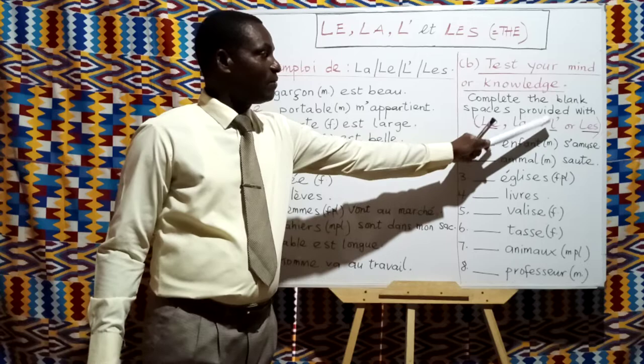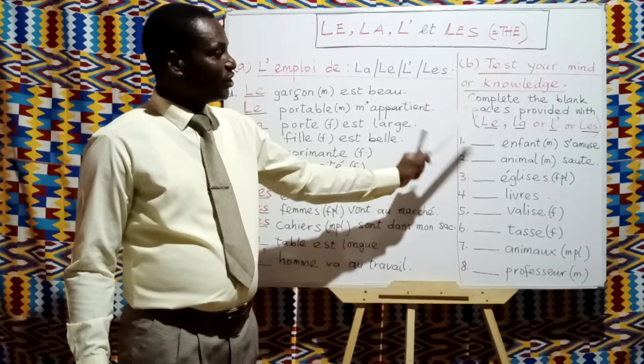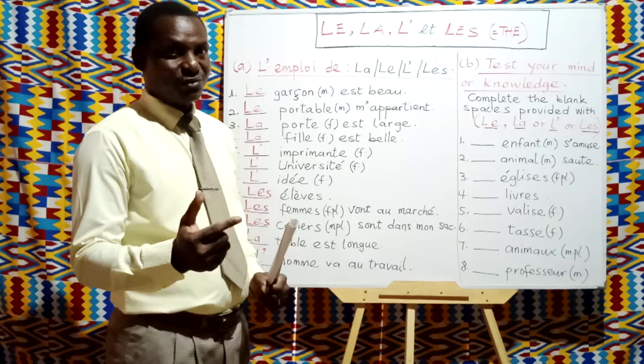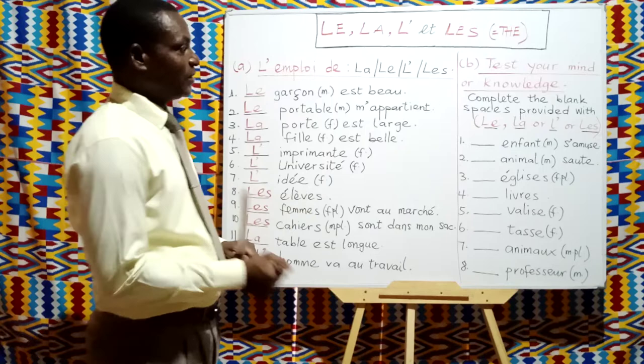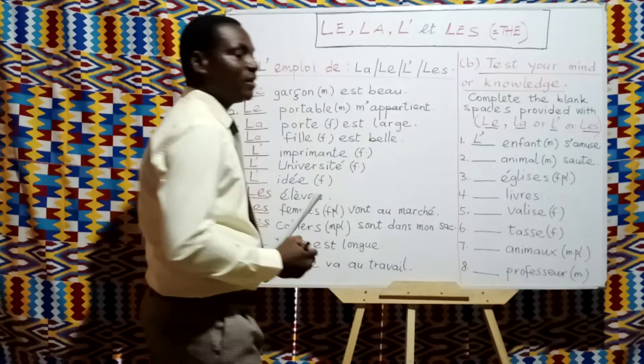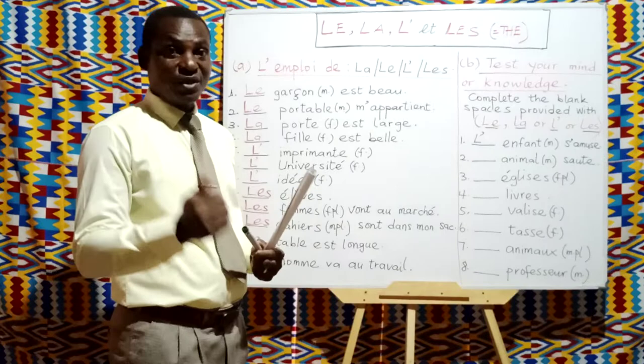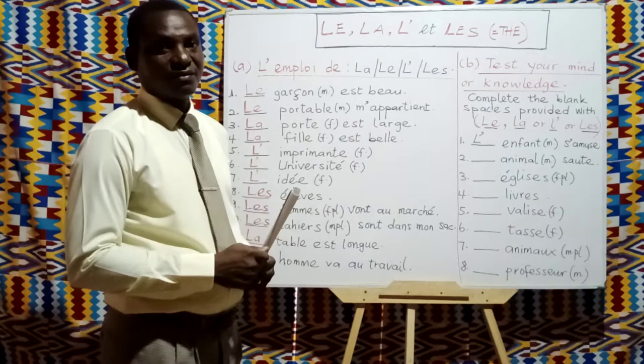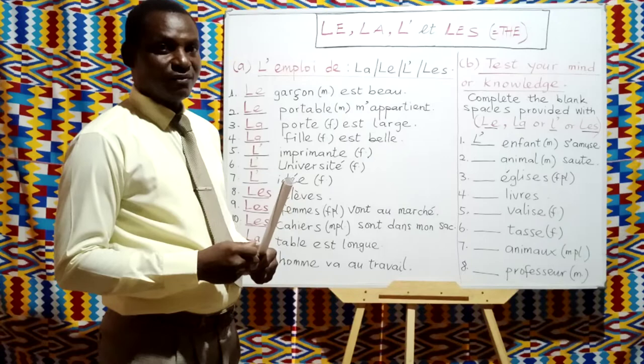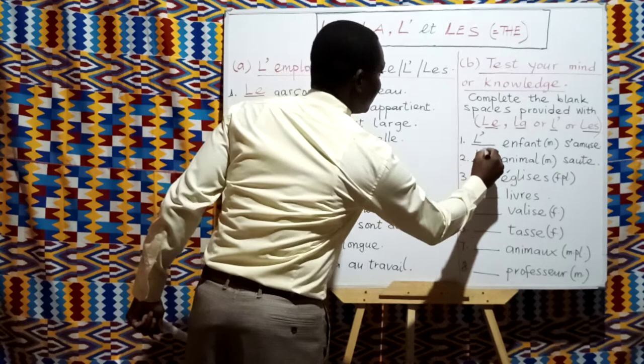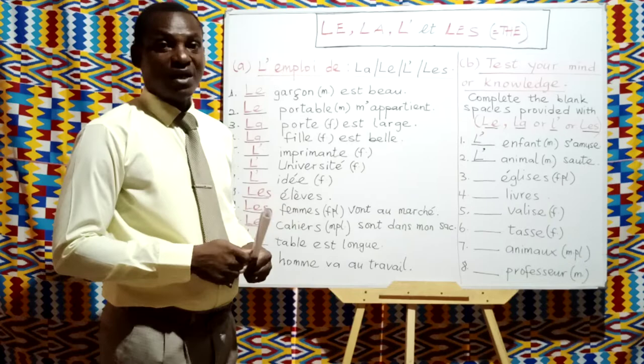Number one: blank enfant s'amuse. The answer is L'enfant s'amuse, because enfant is masculine singular and begins with the vowel 'e'. Number two: blank animal saute. The answer is L'animal, because animal is masculine singular beginning with the vowel 'a'. So, L'animal.